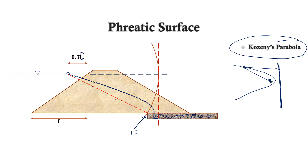The actual seepage line is found to be somewhat different from this theoretical parabola, because near the upstream surface it deviates such that water enters the dam in a perpendicular manner — that is, the seepage line will be perpendicular to the upstream slope of the dam. We therefore use an arbitrary curve that starts perpendicularly from the dam surface and meets the parabola smoothly. That is how we draw the seepage line.